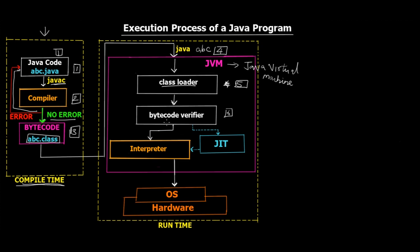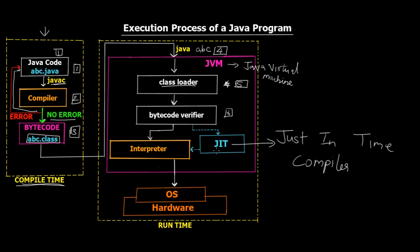After the Bytecode Verifier verifies the class file, it is transferred to the interpreter or the JIT compiler. JIT stands for Just-In-Time — it's a special type of compiler we'll cover shortly. After the interpreter interprets the abc.class line by line, the instructions are transferred to the OS or hardware to be executed, outside the JVM. The OS can be Windows, macOS, or Linux, and the JVM varies depending on the OS.